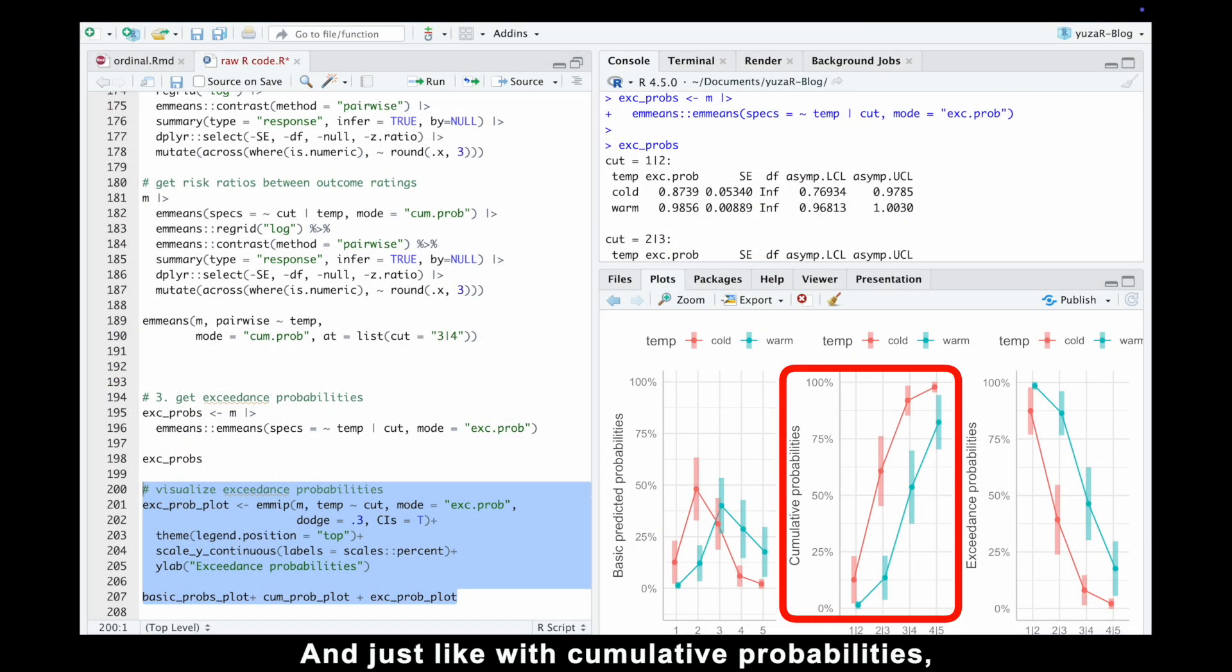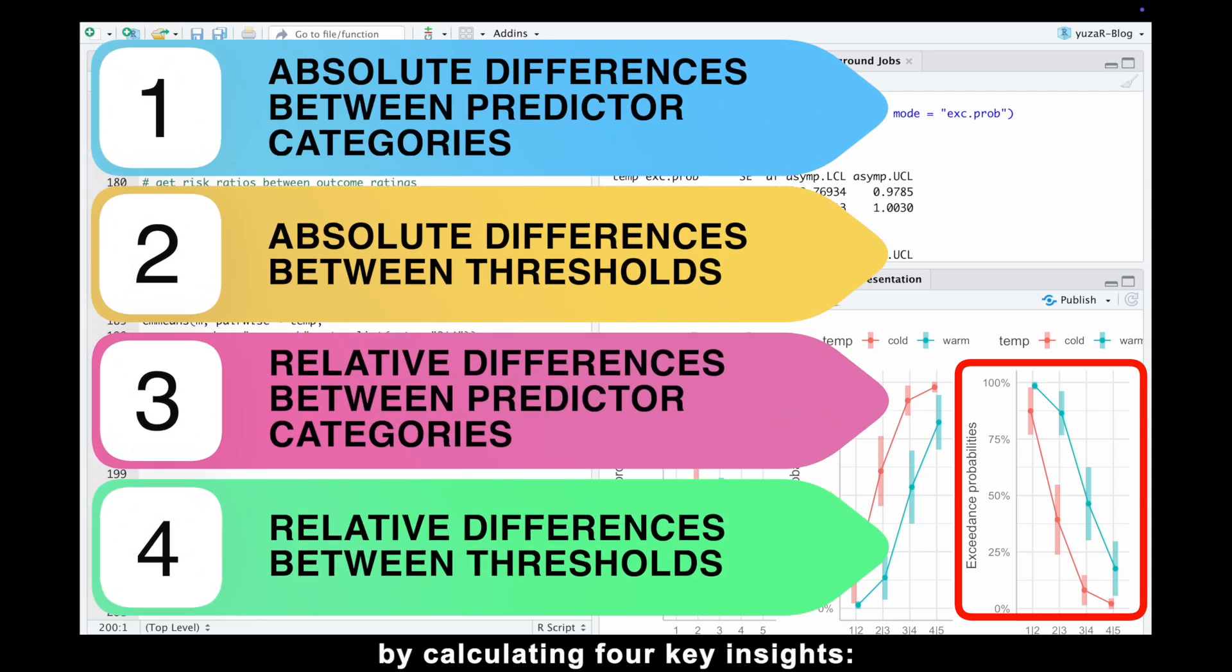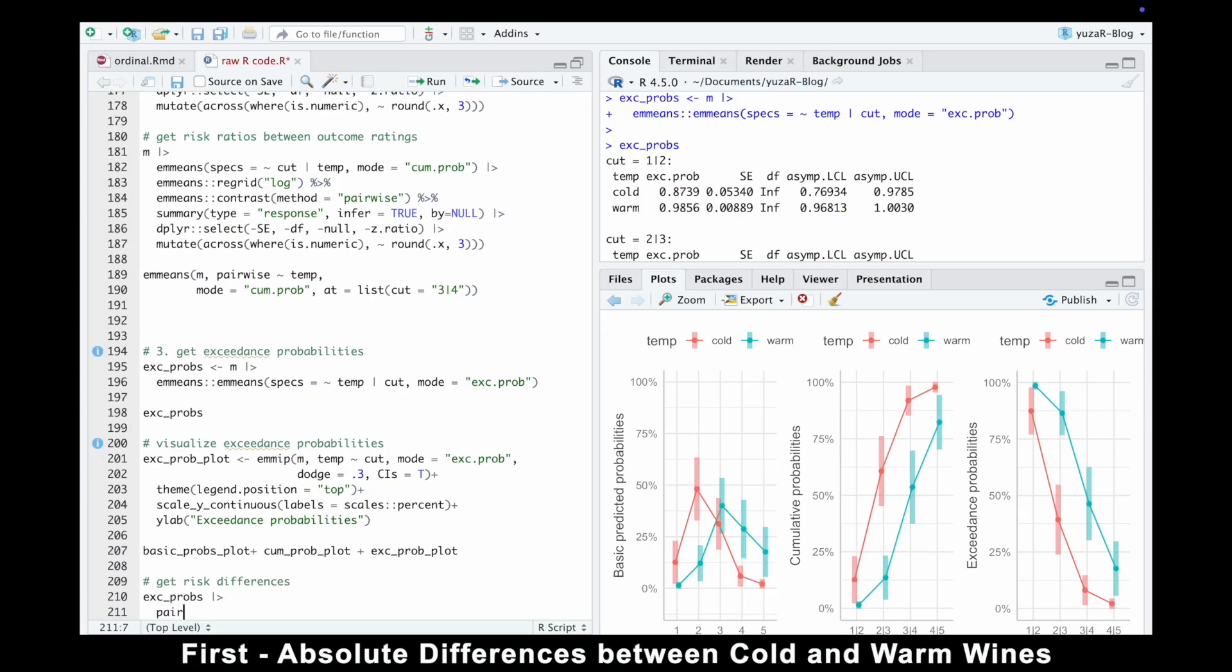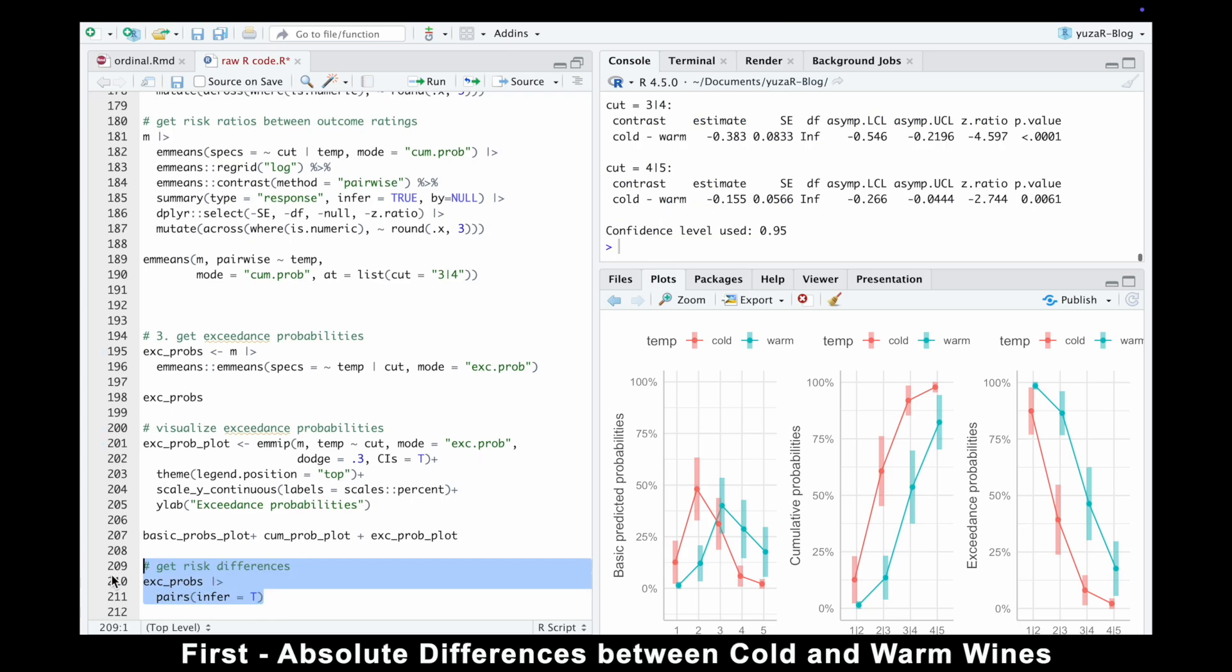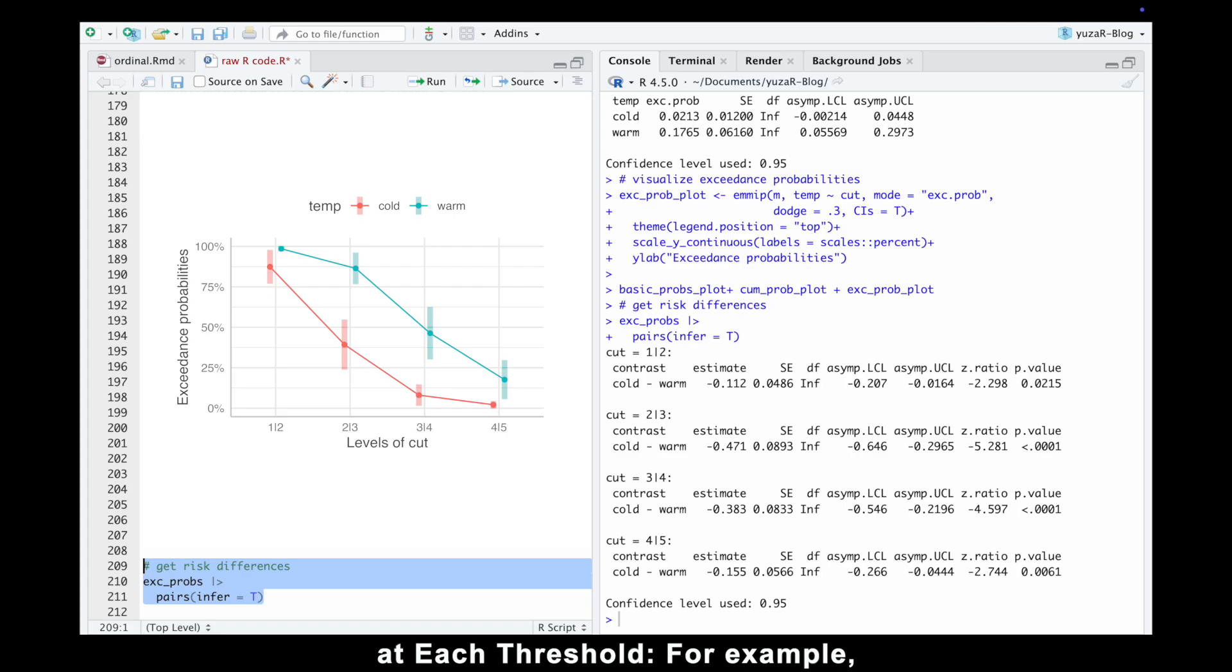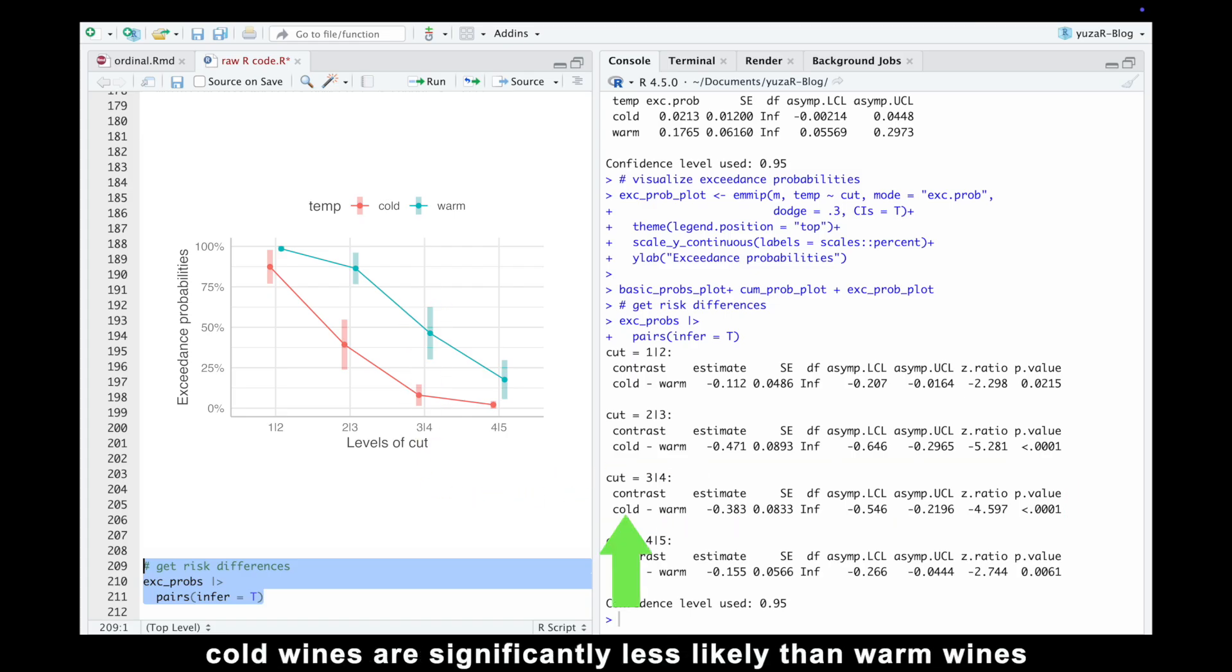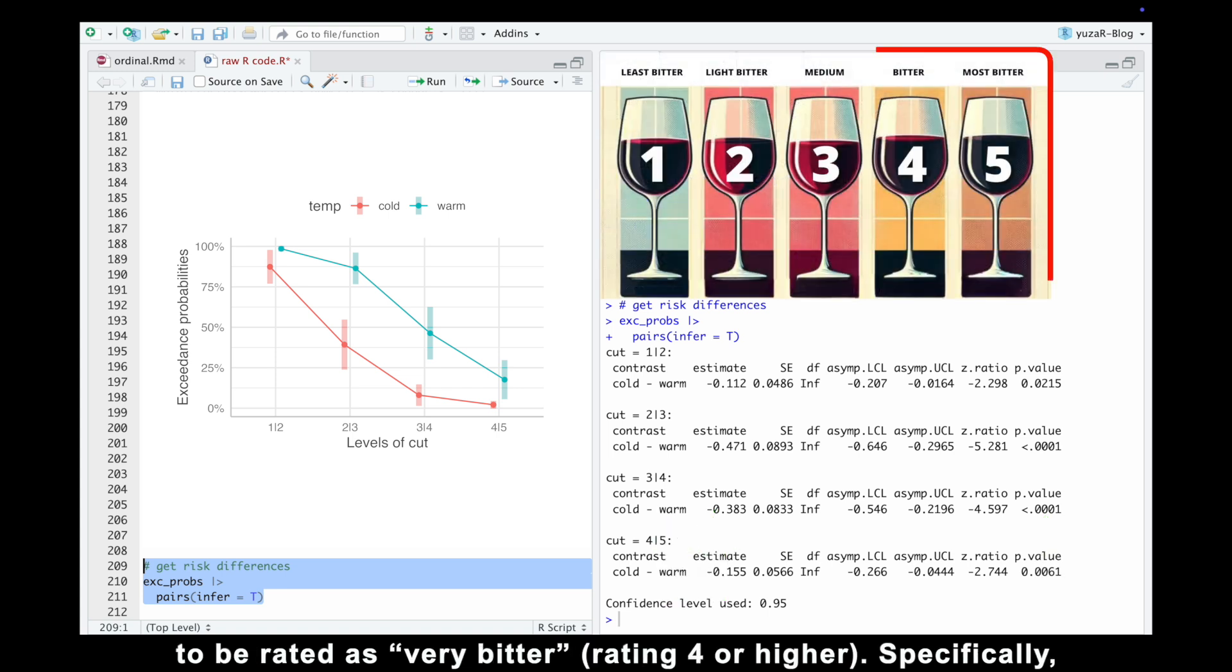And just like with cumulative probabilities, we can interpret exceedance probabilities clearly by calculating four key insights. First, absolute differences between cold and warm wines at each threshold. For example, at the bitterness threshold between ratings 3 and 4, cold wines are significantly less likely than warm wines to be rated as very bitter or higher, rating 4 or higher.